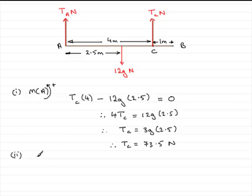I'm going to resolve upwards. Take upwards as positive. And so we're looking at the resultant force acting on the beam. So we've got Ta acting upwards, plus the tension at C, which we know is 73.5. So we can put that in as 73.5. We've got the weight acting downwards in the negative sense. So that's going to be minus 12g. They're all the forces. That's the resultant force. And that resultant force, because it's in equilibrium, is zero.